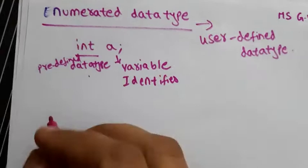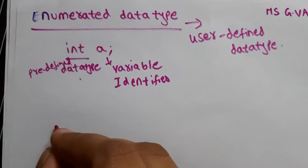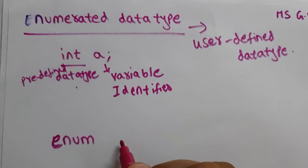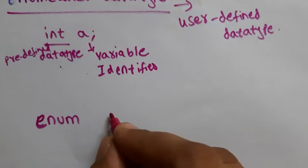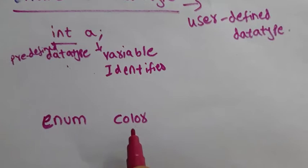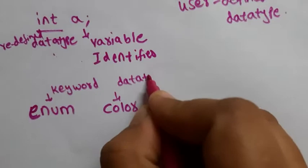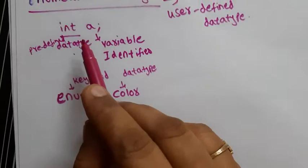So how do you create a user-defined data type? Let us see an example with the syntax. The keyword 'enum' is used for enumerated data types. For example, instead of int, I want to create my own data type with the name 'color'. So 'enum' is the keyword, and 'color' is my own data type name.